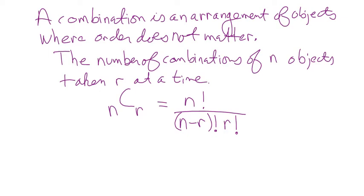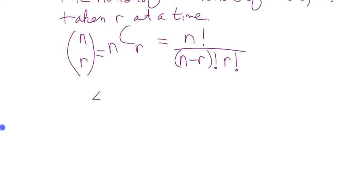This is also denoted as n over r written as a set of brackets with n written over r — you'll see that on your formula sheet and in the book. You'll also see it in your calculator: under nPr, right beneath that is nCr, and beneath that is factorial.